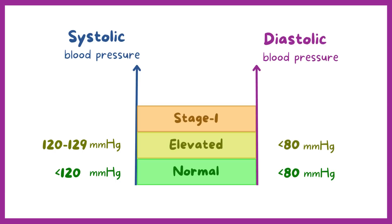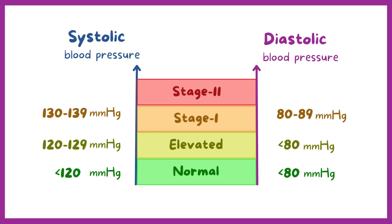Stage 1 hypertension is between 130 and 139 mmHg on the systolic side, and between 80 and 89 mmHg on the diastolic side. Stage 2 hypertension is defined as anything that's 140 mmHg or higher on the systolic side, and 90 mmHg or higher on the diastolic side.